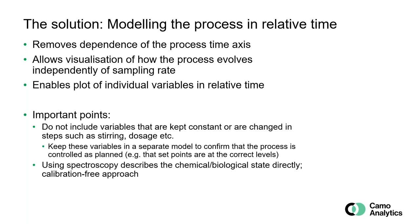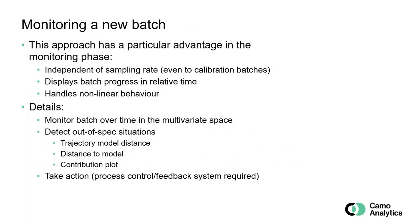If we have sensors like spectroscopy, the good thing is that these sensors will reflect the chemical or biological state directly. So it's a kind of calibration-free approach, and we don't need to worry if variables are kept constant or not. We believe that this approach is particularly advantageous in the monitoring phase because, as mentioned, it's independent of sampling rate, and also independent of what state you are starting in. If you start collecting data before the reaction has actually started, it doesn't matter — we just see that the process has not changed in a chemical sense. And we show this progress in relative time, always from 0 to 100, and we can also handle non-linear behavior. So we monitor the batch over time in the multivariate space, detect out-of-spec situations with different diagnostics, and then we take some action.